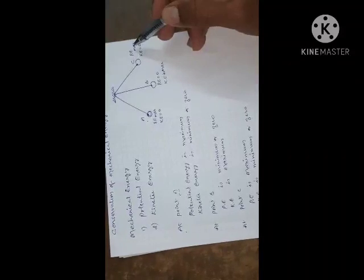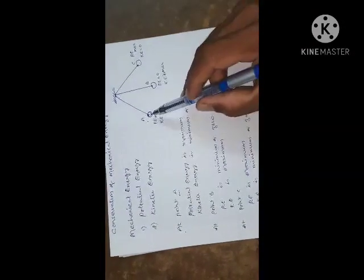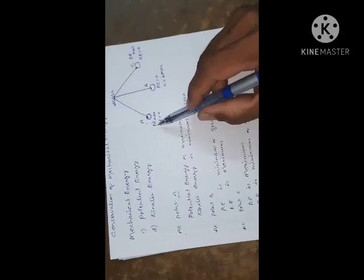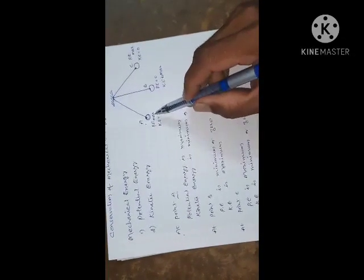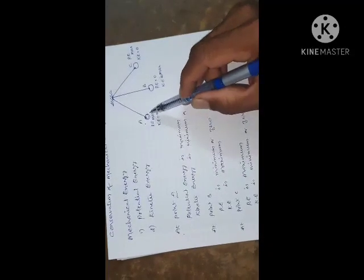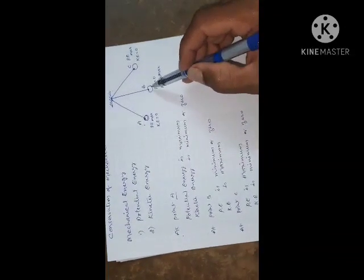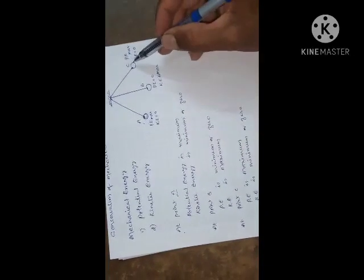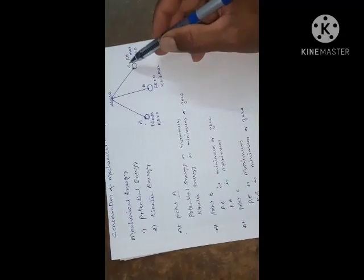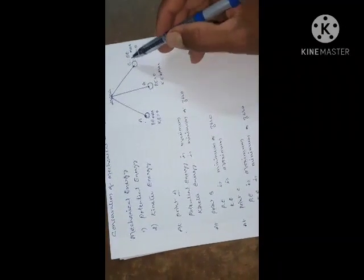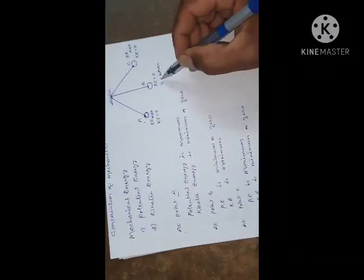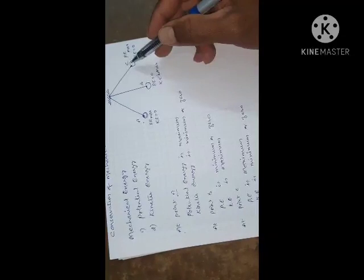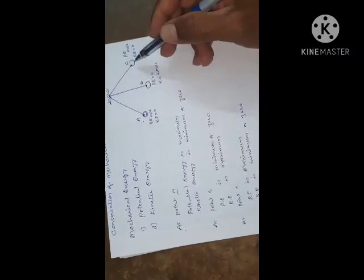In this way, in the case of a pendulum, at point A the total mechanical energy is in the form of potential energy. That potential energy is changed to kinetic energy on reaching point B. This kinetic energy changes to maximum potential energy on reaching point C. In this way, energy is changed from potential to kinetic, kinetic to potential, but the total mechanical energy at any point remains the same.